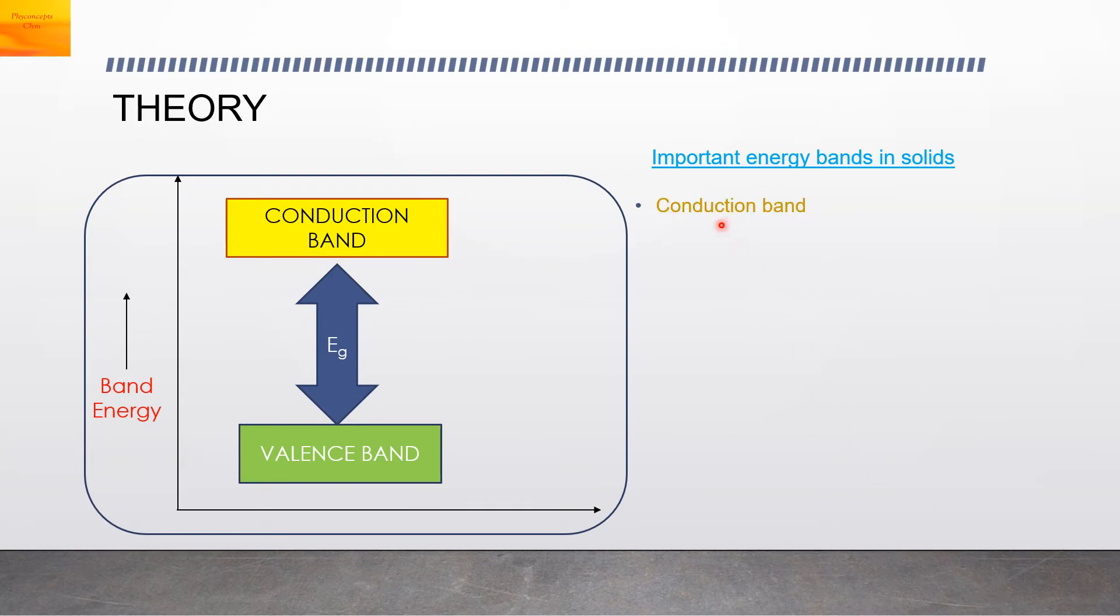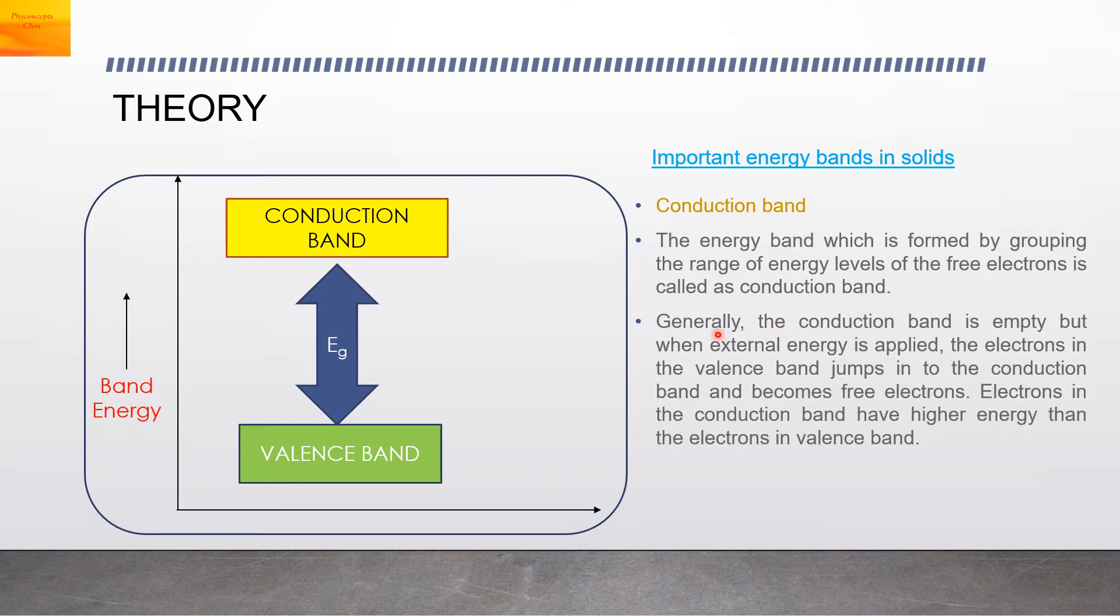Second important energy band is the conduction band. The energy band which is formed by grouping the range of energy levels of the free electrons is called conduction band. Generally, the conduction band is empty, but when you supply external energy, the electrons in the valence band jump into the conduction band and become free electrons. The electrons in the conduction band have higher energy than the electrons in the valence band. The conduction band electrons are not bound to the nucleus of the atom.